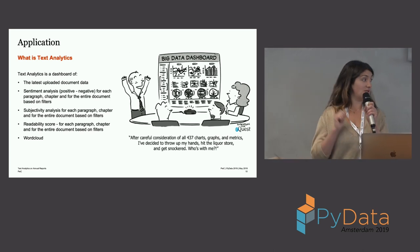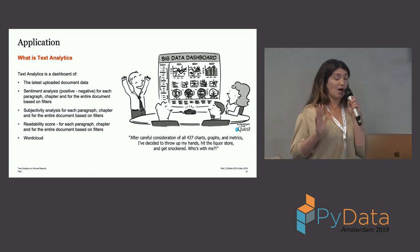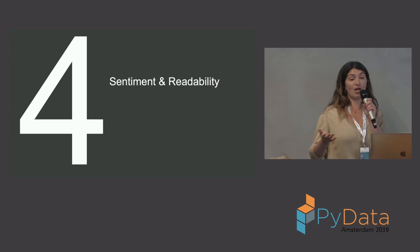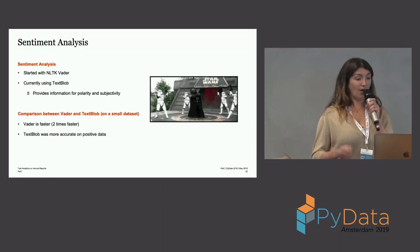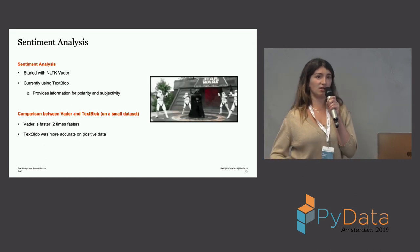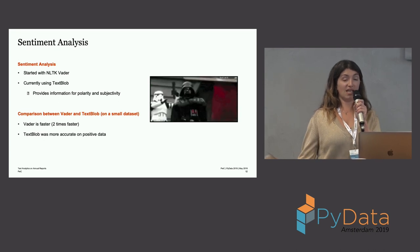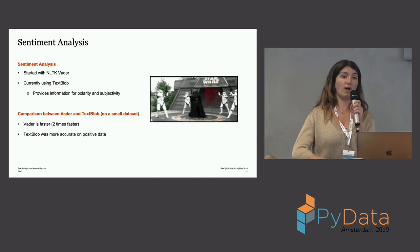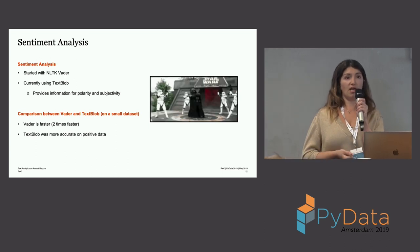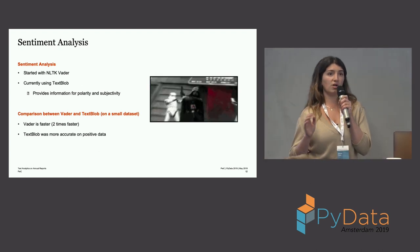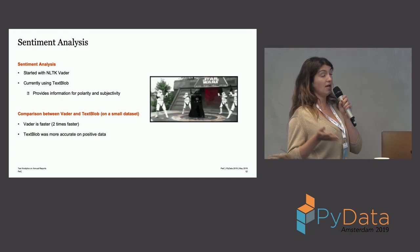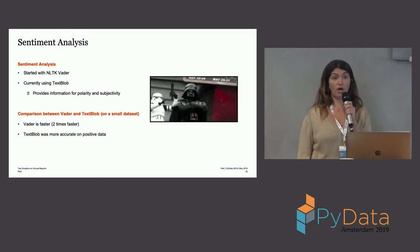Now let's go through the sentiment and readability libraries we actually tested. It will be a little bit technical, but I think it's useful — it was very helpful to explain to clients what we're actually doing. For sentiment analysis, we started with off-the-shelf libraries since our data scientists were coming later in the process. We started with NLTK VADER and TextBlob and compared the two on a small database. NLTK VADER was performing faster than TextBlob, but when we looked at the data, we saw that TextBlob was more accurate on positive comments.